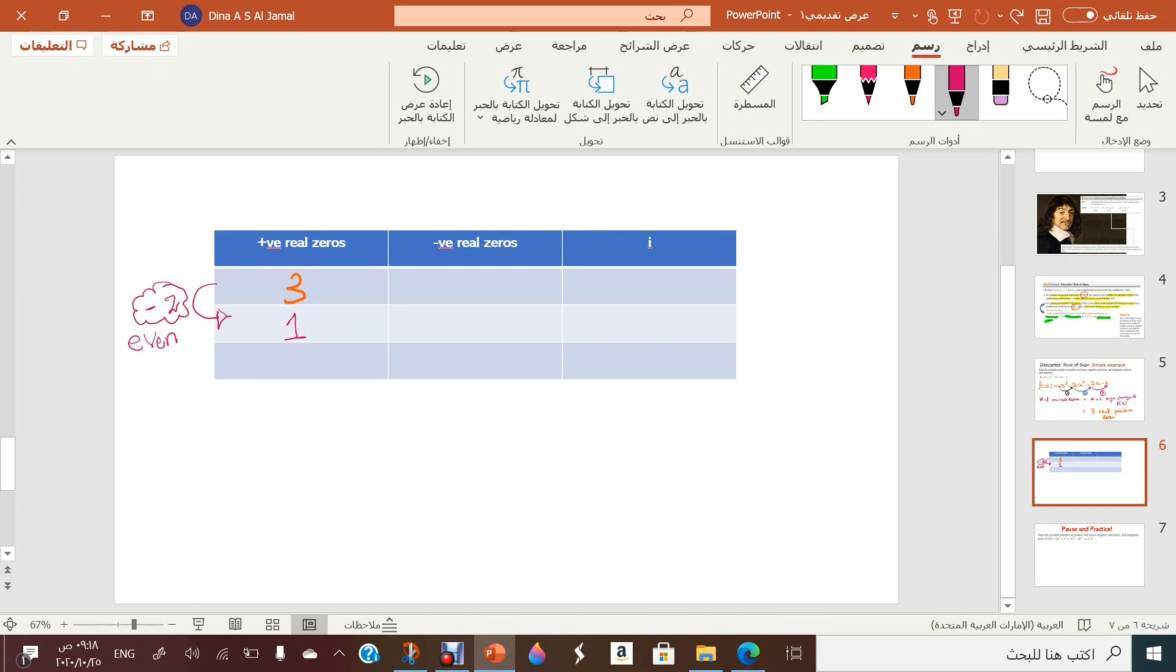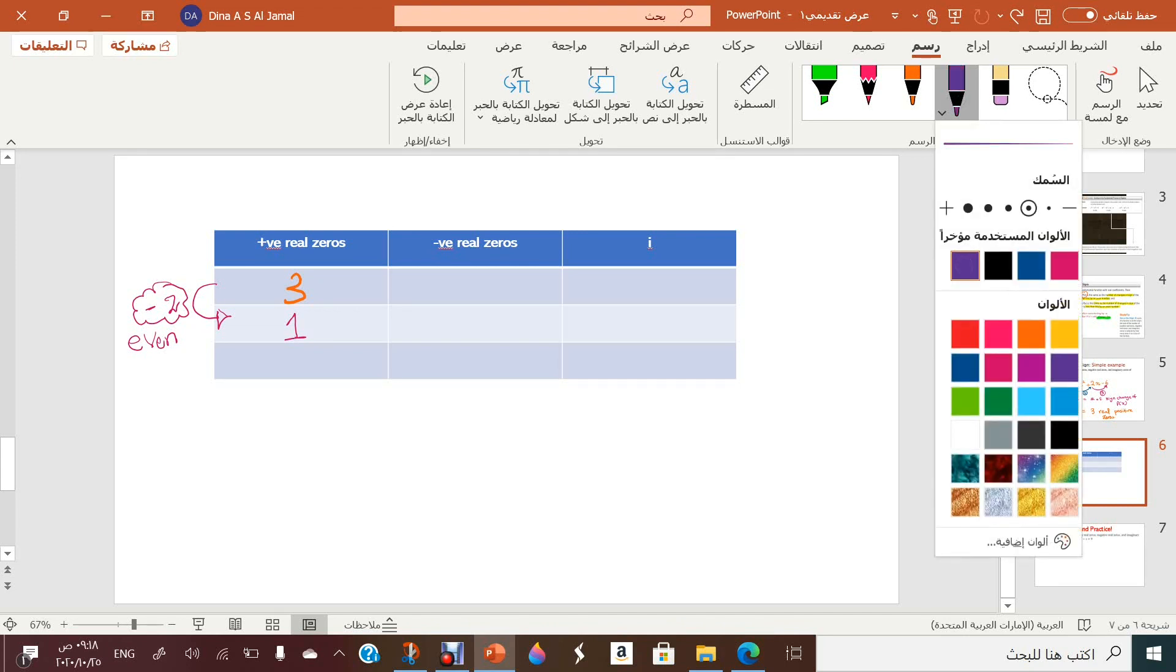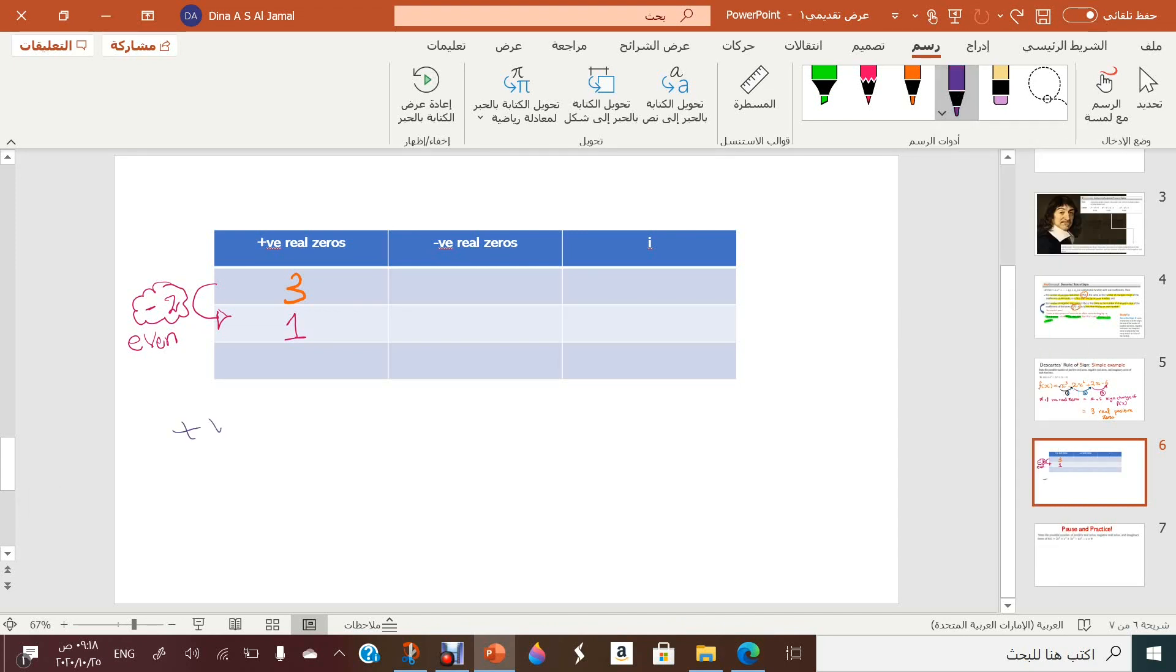Great. So now we are having the positive negative real zeros as 3 or it can be 1. Now let's understand where are the rest.